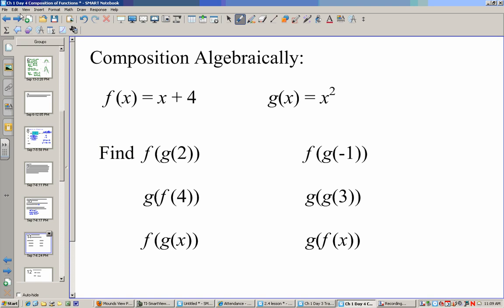Algebraically, if I have f(g(2)), I put 2 into the function of g first, so 2 squared is 4. So now, since this is equal to 4, now I have f(4). To find f(4), 4 plus 4 is 8. Now g(f(4)), f goes into this function, 4 plus 4 is 8. So g(8), plug it into this function, 8 squared is 64.